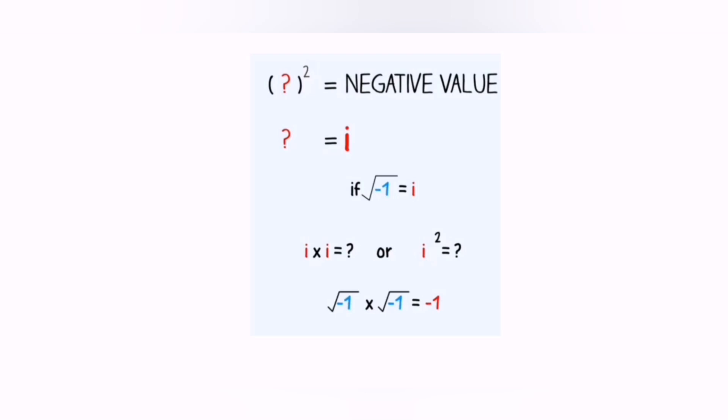If the square root of negative 1 is i, what is i times i, or we can say i squared? It is square root of negative 1 multiplied with the square root of negative 1. That gives us negative 1. There you go. We got a negative number by squaring a number.